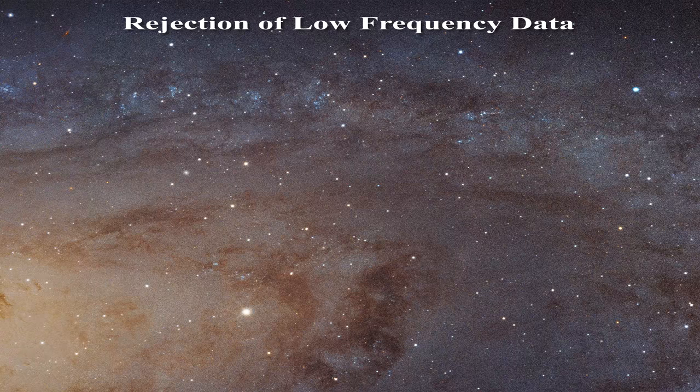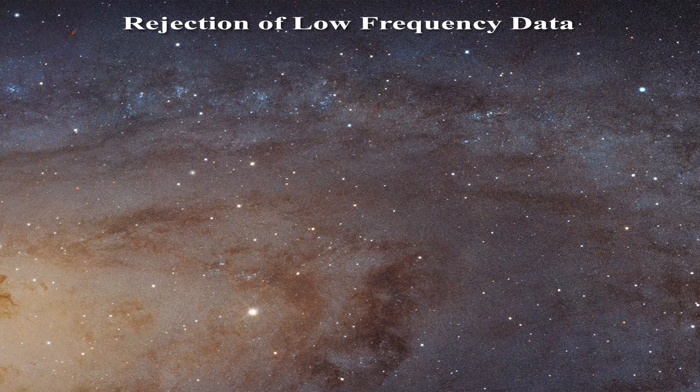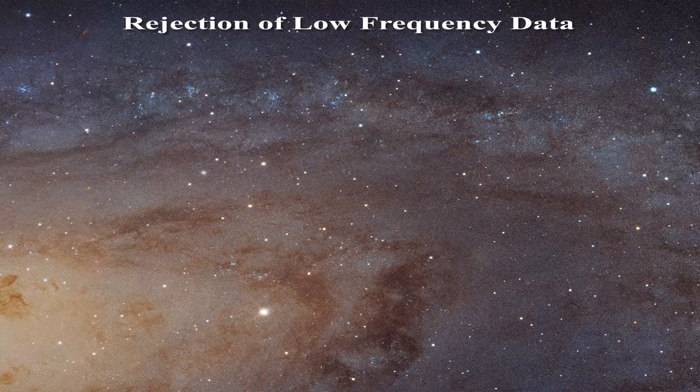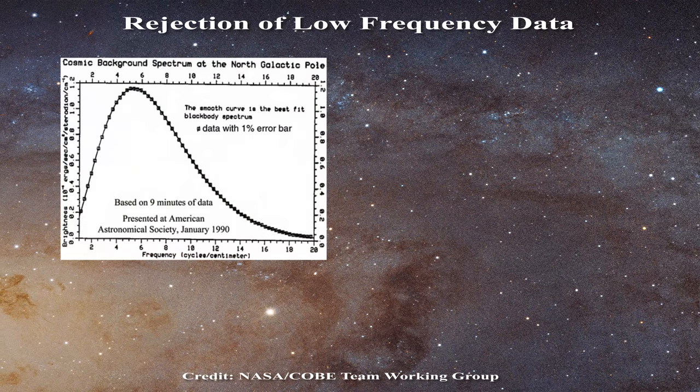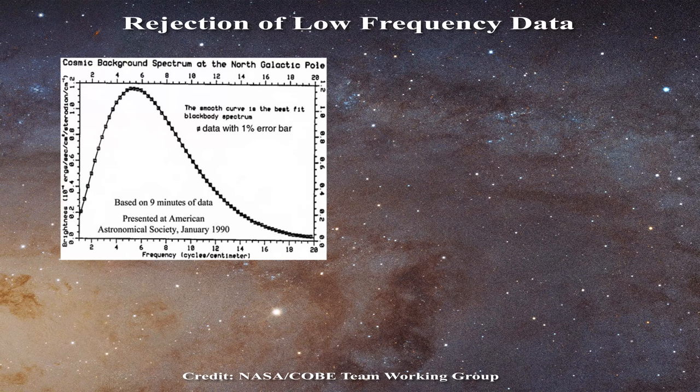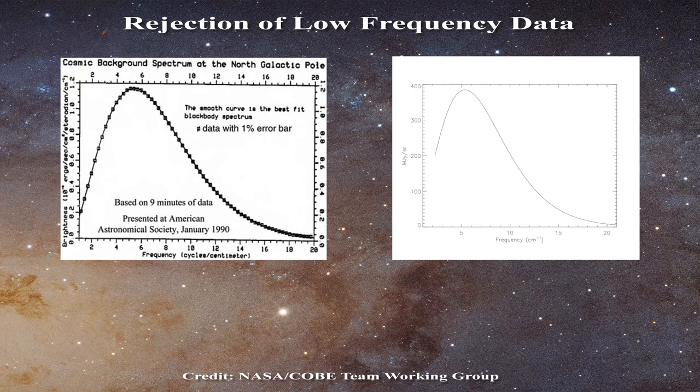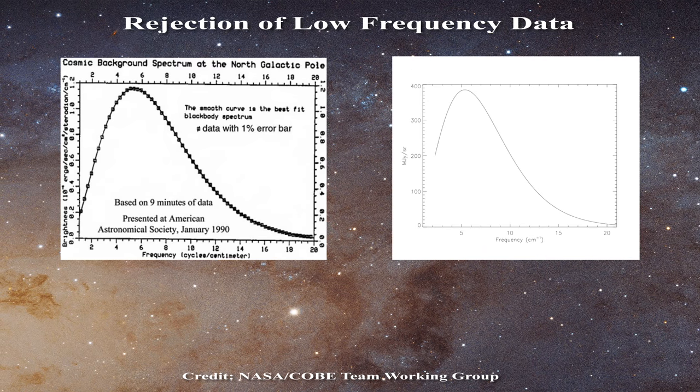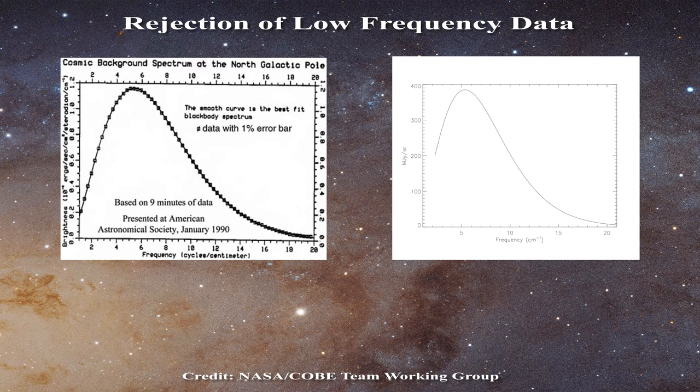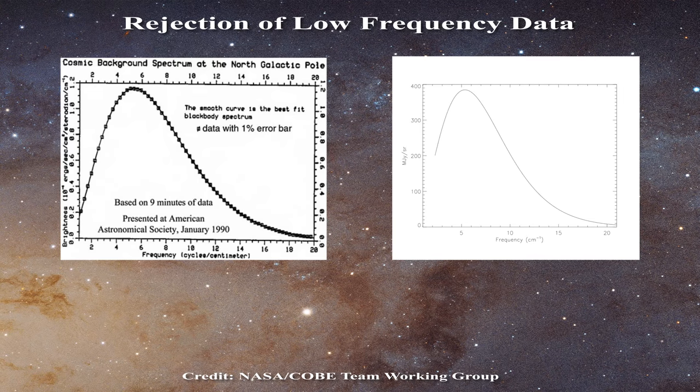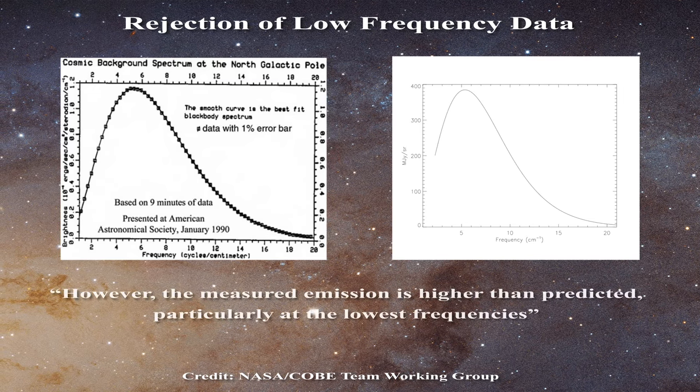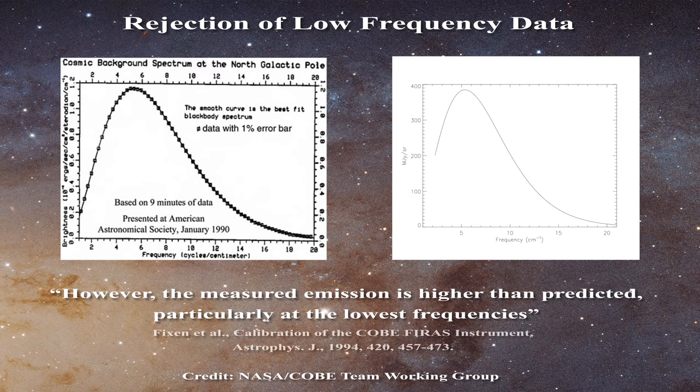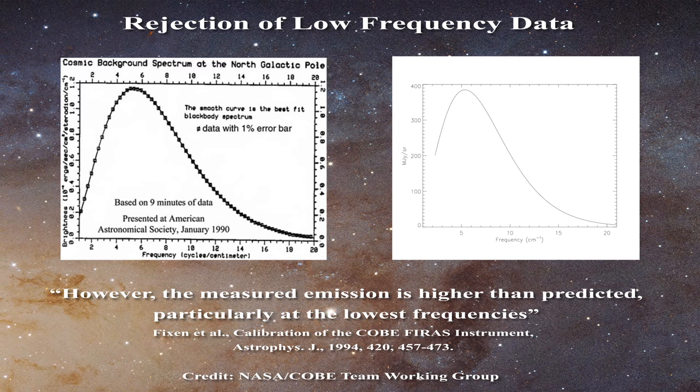But what is more concerning is the apparent rejection of low frequency data. Remember that the COBE FIRAS horn was supposed to be sensitive from 1 to 95 reciprocal centimeters. In fact that is what was reported in the very first data disclosure in January 1990 as you can see here. But eventually all data plotted for the region between 1 and 2 reciprocal centimeters is removed as you can see in this figure. The reason that this is so concerning is that this involves the low frequency end of the spectrum, that region most prone to the effects of diffraction, and also that region from which data should have been easiest to obtain. Fixsen et al. present a single sentence to explain the loss of data. However, the measured emission is higher than predicted, particularly at the lowest frequencies. Keep this in mind, as it shows that not all is quite right with the COBE FIRAS data.